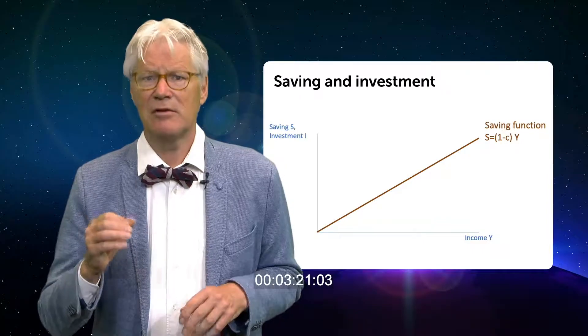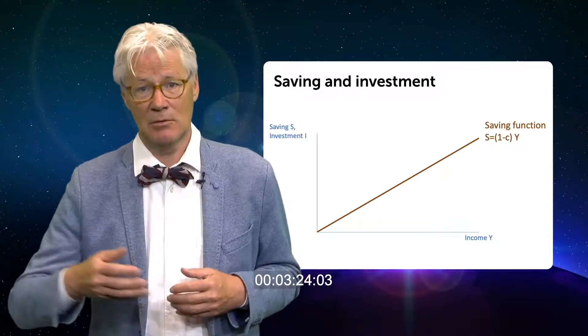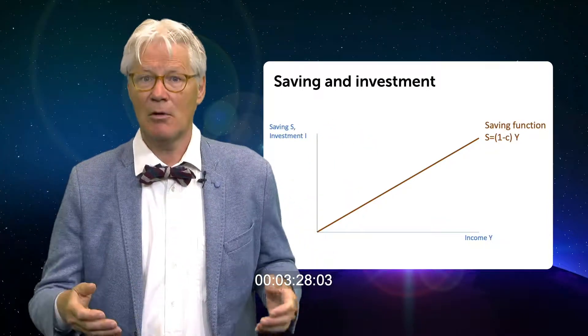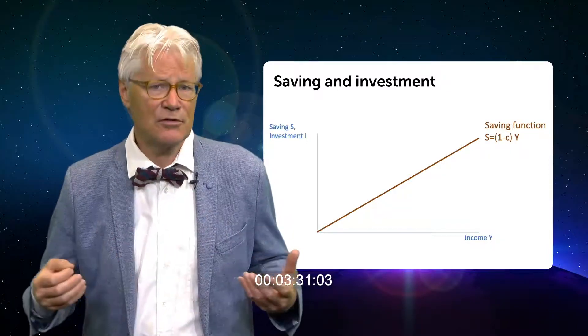The brown saving function slopes upward. If income increases, people tend to save more. At zero income people will dis-save in order to pay for necessities.